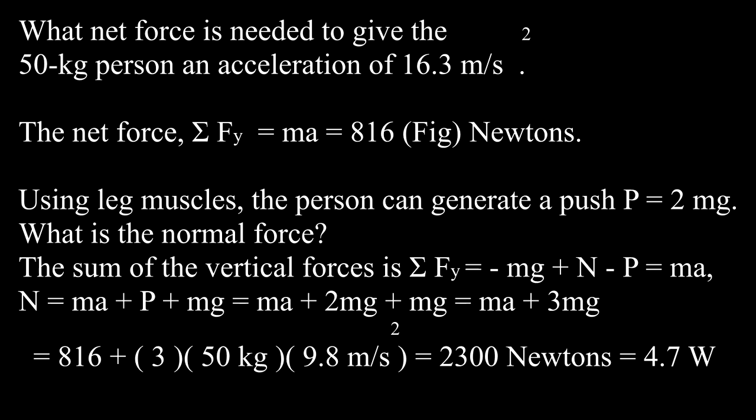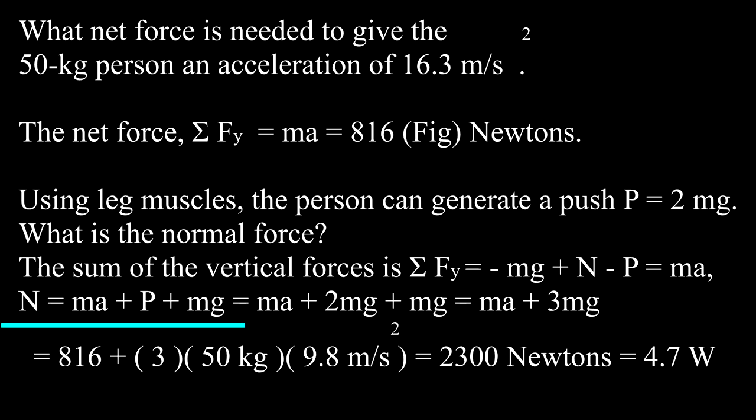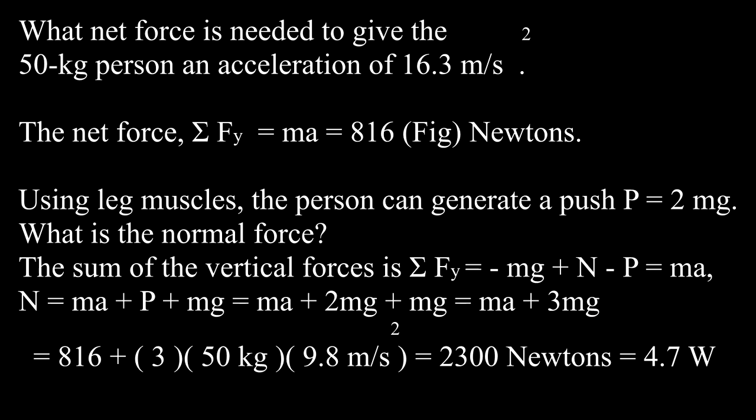What is the normal force? We had earlier decided that the sum of the vertical forces is minus Mg plus N minus P equals Ma. Solving for N equals Ma plus P plus Mg, and setting P equal to 2mg, we get N equals Ma plus 3mg equals 816 newtons plus 3 times 50 kilograms times 9.8 meters per second squared equals 2300 newtons, which is 4.7 times the weight of the person.